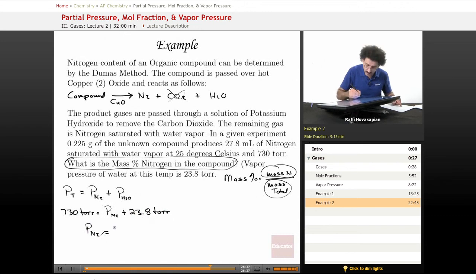and we end up with... is that correct? Let's see. Arithmetic has never been my strong suit. 730 minus 23.8... that's going to be 706.2 torr. Excellent.